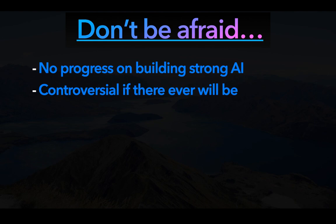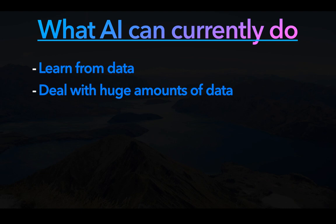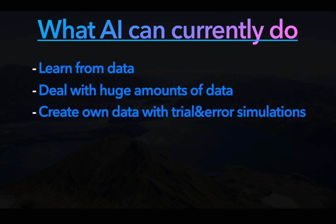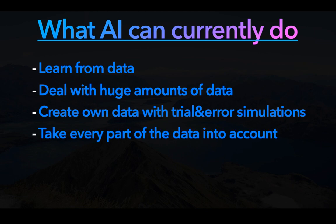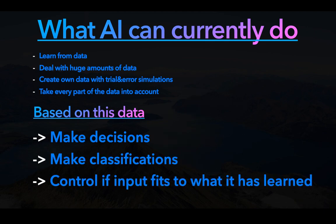But first, let's see what AI can do for us and what opportunities it holds. As we've already seen, AI can learn from data and deal with huge amounts of it. Additionally, it can create its own data with trial-and-error simulations and learn from that too. AI is able to take every little part of the data into account, even the smallest details that humans would most likely not see. Based on this data, a program can make decisions — like what chess move to play next — make classifications like dog or no dog, and check if some input fits what it has learned, and correct or improve the input if necessary. An example of this would be spell checking.